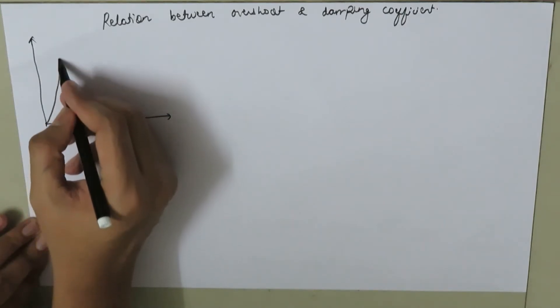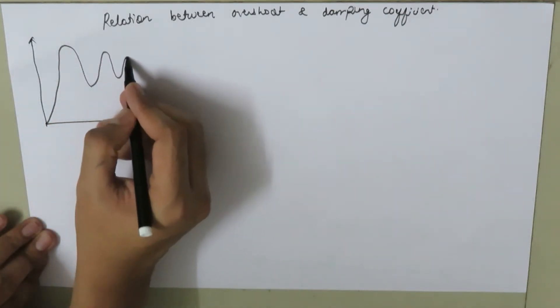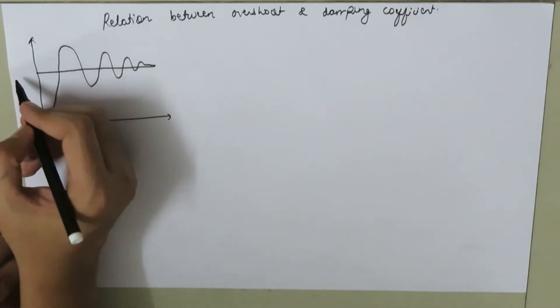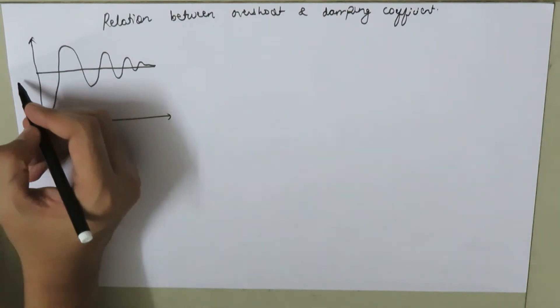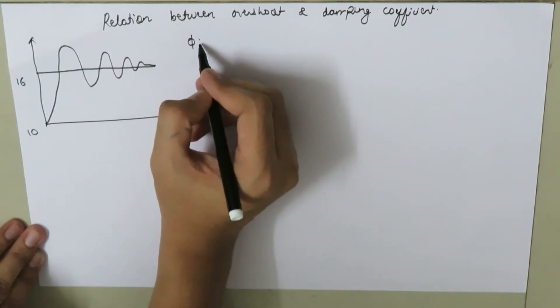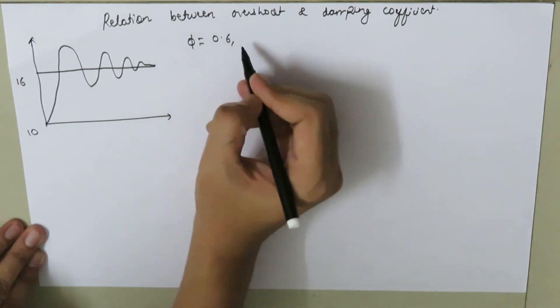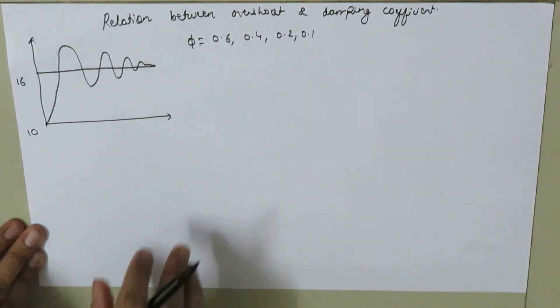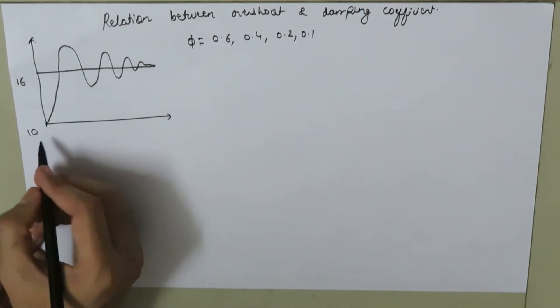If the response is as shown, and the ultimate value is supposed 16 and the minimum value is supposed 10, we need to find the overshoot for damping coefficients of 0.6, 0.4, 0.2, and 0.1.